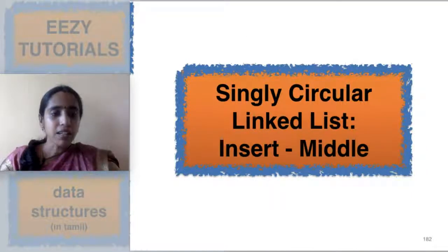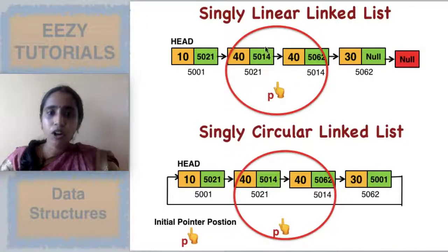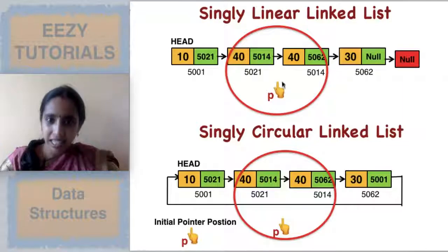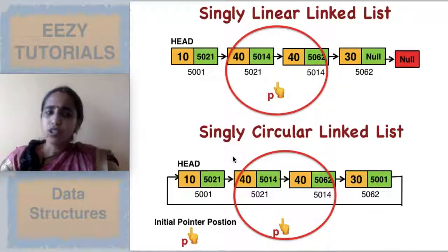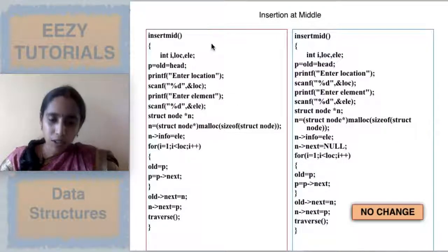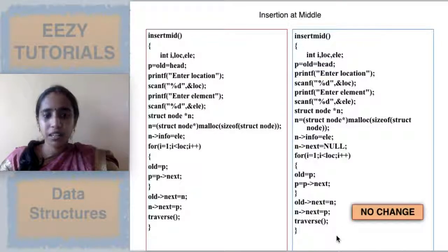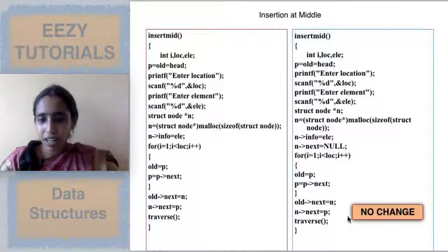Now for insertion at the middle — comparing singly linear linked list and circular linked list — insertion at the middle does not involve any last node or first node; the insertion only takes place in the middle part. So there is no change. The same code you followed in the singly linear linked list can be used for insertion at the middle in the singly circular linked list.